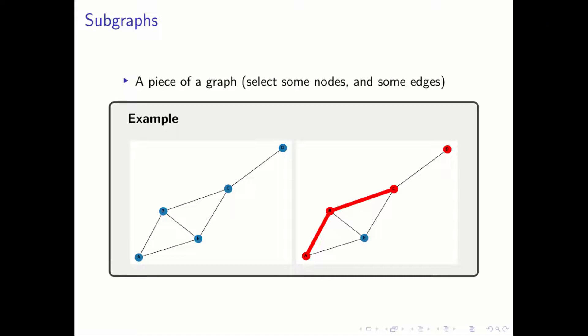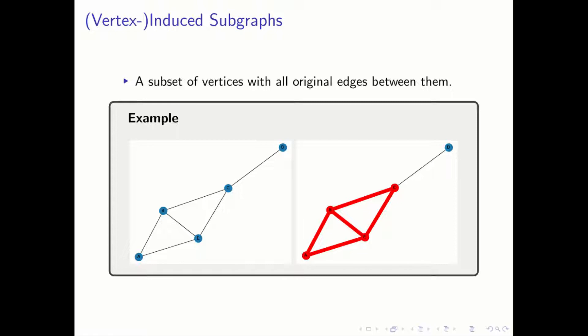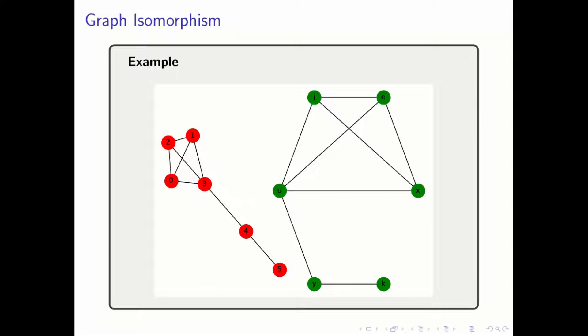A subgraph is intuitively a piece of a graph. I like to think of it procedurally, by selecting vertices and then taking some of the edges between them. The left graph in the example is the original graph, and the one on the right has a subgraph selected in red. An induced subgraph is a subgraph where we have to select all the edges that connect the vertices that we selected.